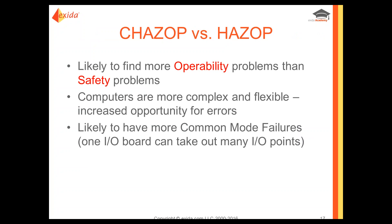Comparing CHAZOP versus HAZOP: with a CHAZOP we're going to find more operability problems than potentially with a HAZOP, which finds hazards specifically. Since computers and control systems are now more complex and flexible, there's increased opportunity for errors and more common mode failures — for example, an I/O board taking out many I/O points, or people not having true independence between controls and safety systems because they haven't wired or configured them properly.